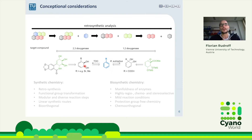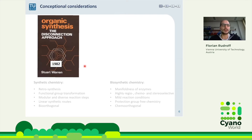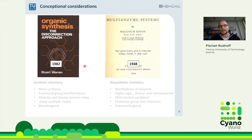Now you might say that's cool and interesting, but the retrosynthesis concept was already published in 1982 by Stuart Warren — the disconnection approach. And the idea of making artificial enzymatic pathways goes back even further: Malcolm Dixon published his book on multi-enzyme systems in 1948 at Oxford Cambridge Press. So when you think you have a brand new idea, check the literature carefully.